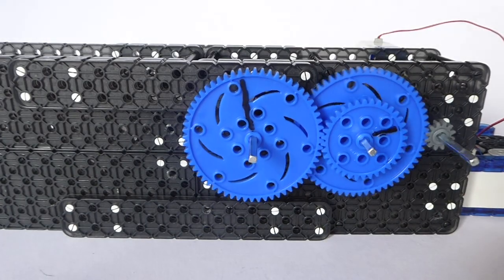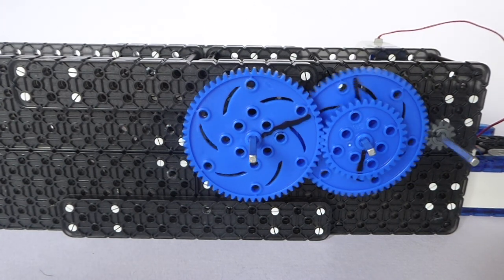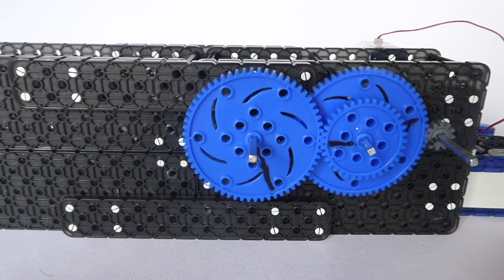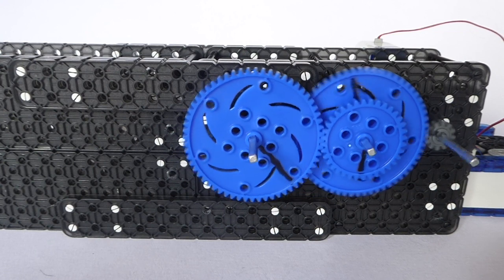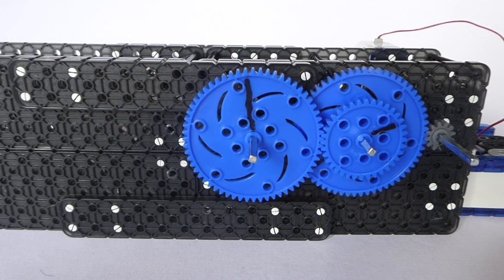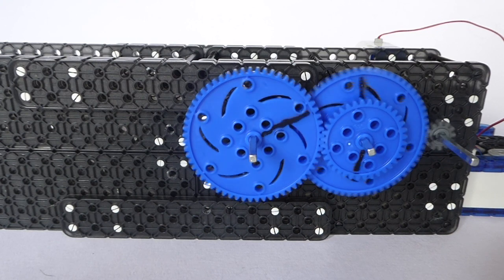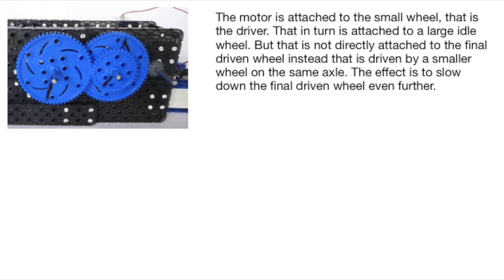In that example the size of the idle wheel made no difference but here we've got two idle wheels. The motor is driving the small grey cog but the idle wheel in the middle has a large wheel meshing with the driver and then a small wheel meshing with the driven. The effect of this combination is to slow down the final driven wheel even further.